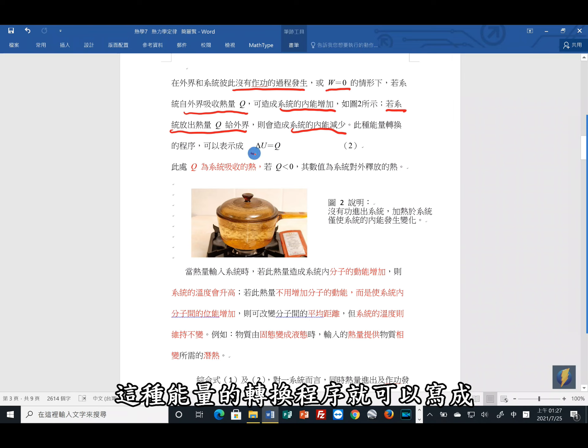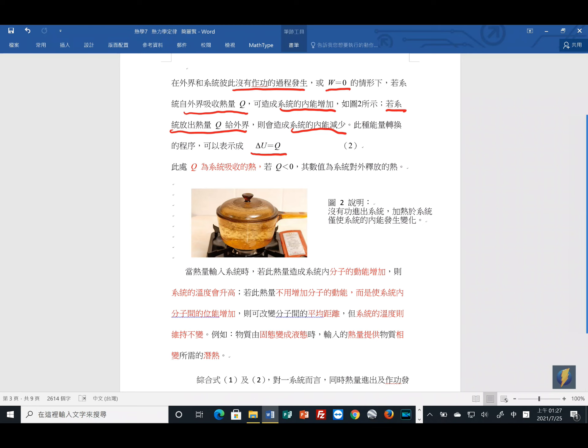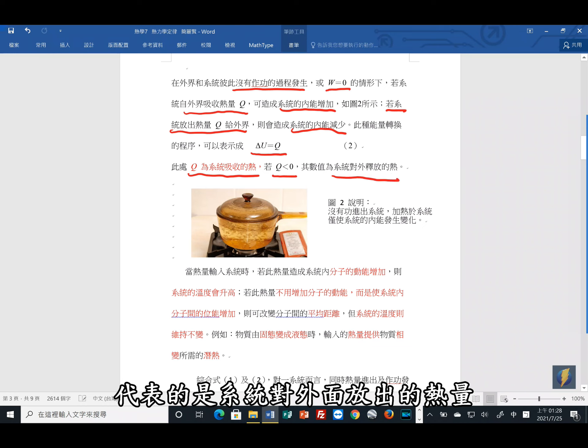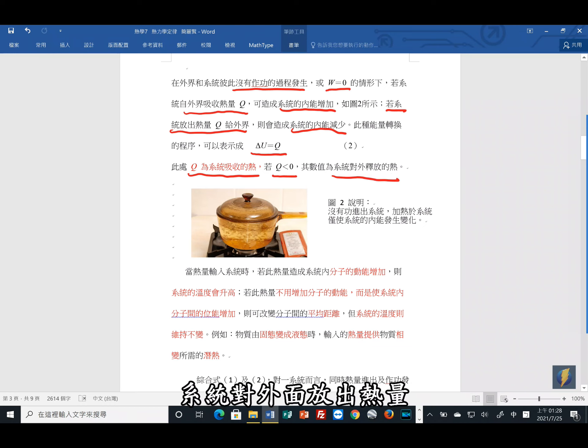如果是系统放出热量给外界,那系统内能会减少。这种能量的转换程序,就可以写成ΔU,ΔU就是内能,会等于Q,Q就是系统对外界放出的热量,Q是一个热量。所以当Q是系统吸收的热,那这个时候,如果我的系统吸收热,那我内部的内能就会增加。但是如果我的Q是小于0,那代表是系统对外面放出的热量,那系统对外面放出热量,那这个时候系统的内能就会减少。